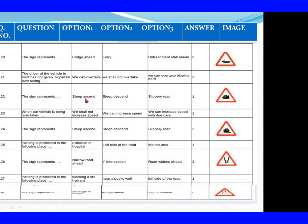Question 123: When our vehicle is being overtaken. Option 1: We shall not increase speed. Option 2: We can increase speed. Option 3: We can increase speed. The right answer is Option 1: We shall not increase speed. Question 124: The sign represents. Option 1: Steep ascent. Option 2: Steep descent. Option 3: Slippery road. The right answer is Option 2: Steep descent.